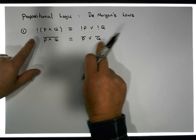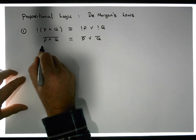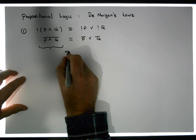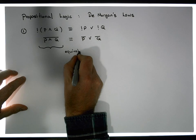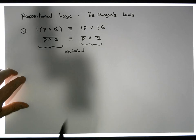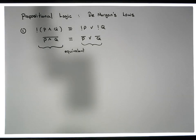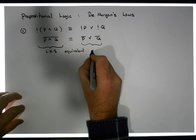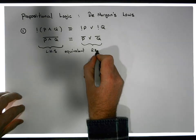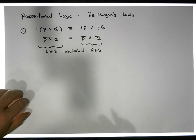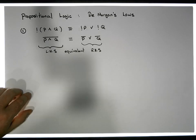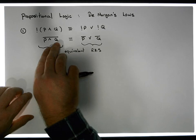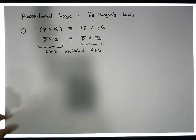So what we'd like to do is prove that the left-hand side — this proposition here — is equivalent to this proposition over here. The way we're going to do it is with truth tables. We'll build a truth table for the left-hand side and a truth table for the right-hand side, and we'll show that under all possible states the proposition can be in, the evaluation of the proposition is the same on either side.